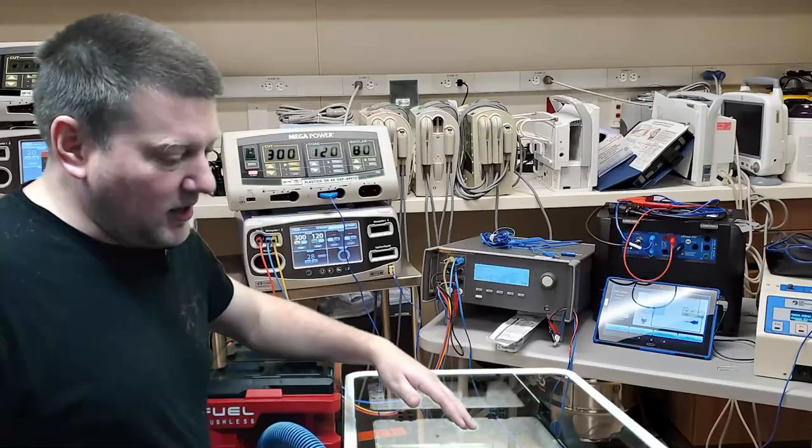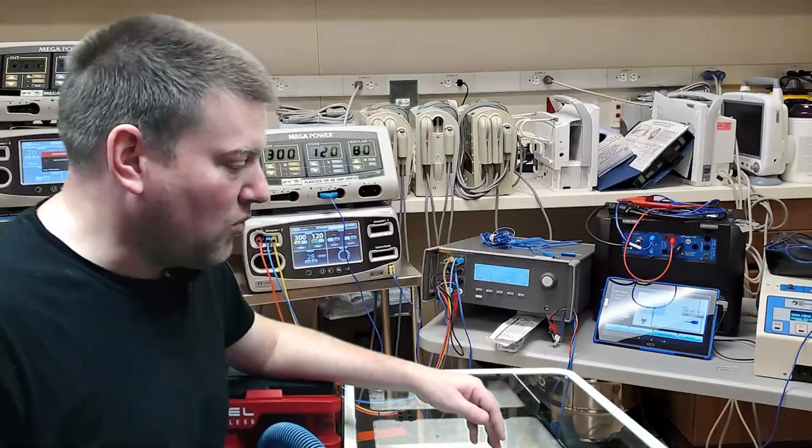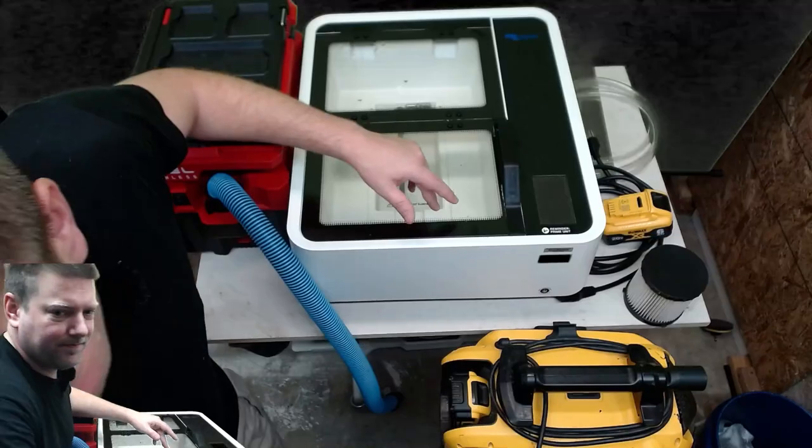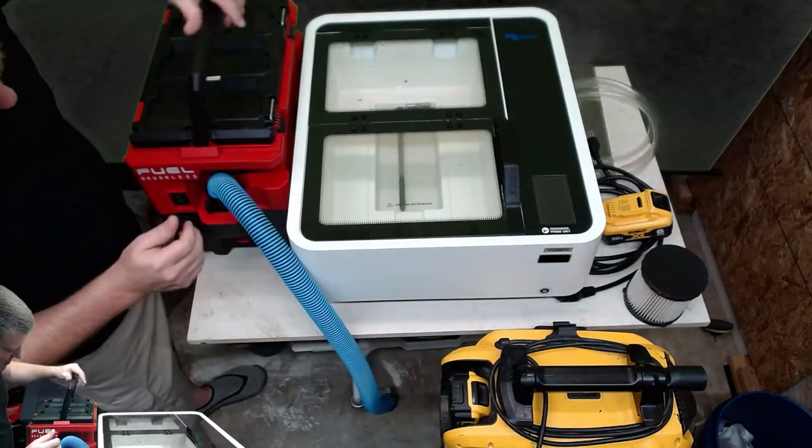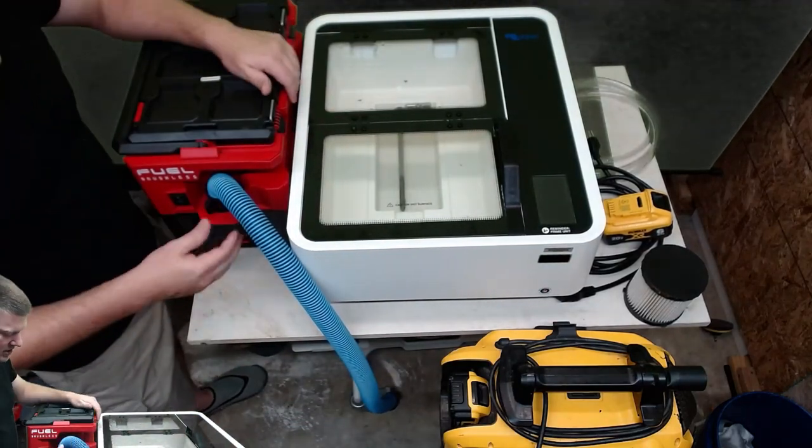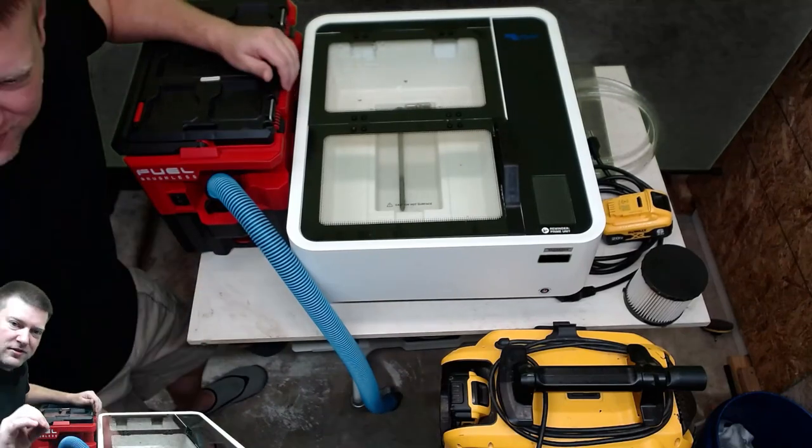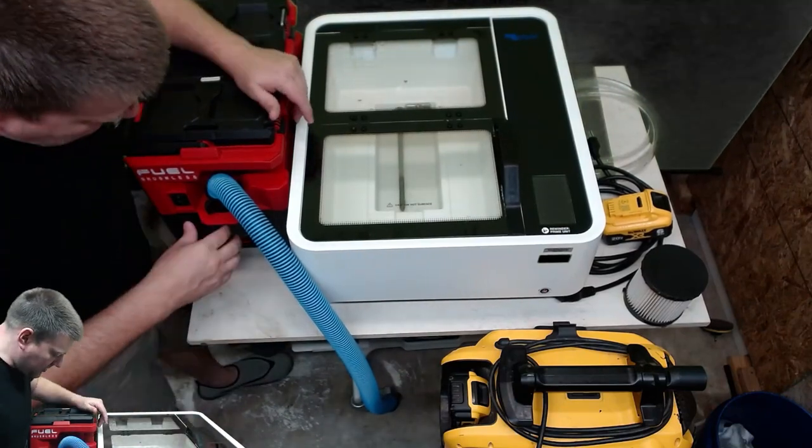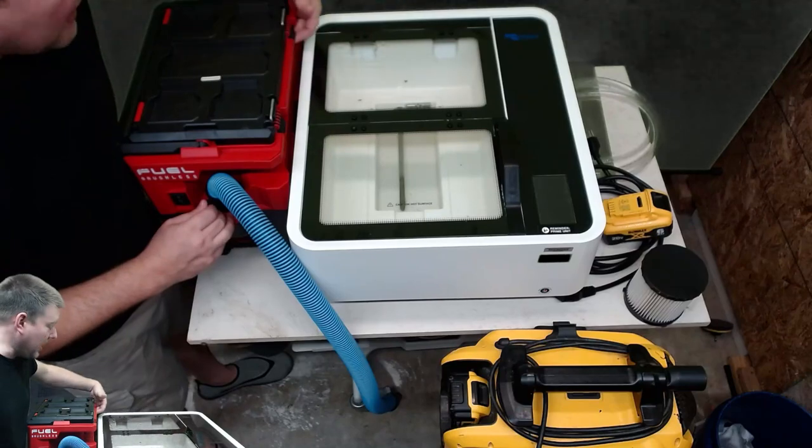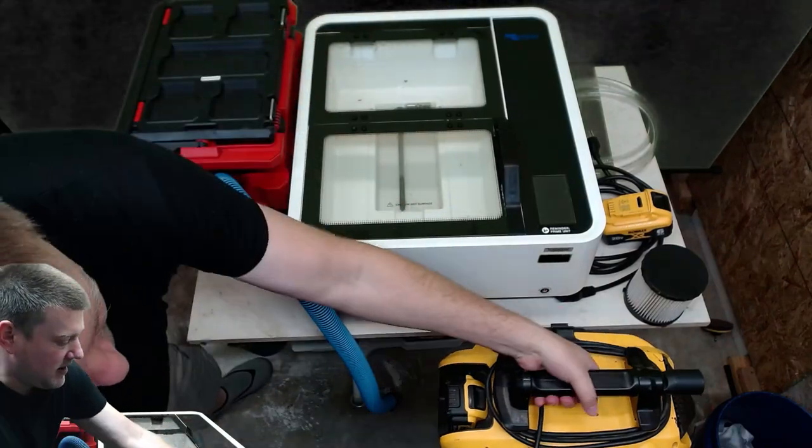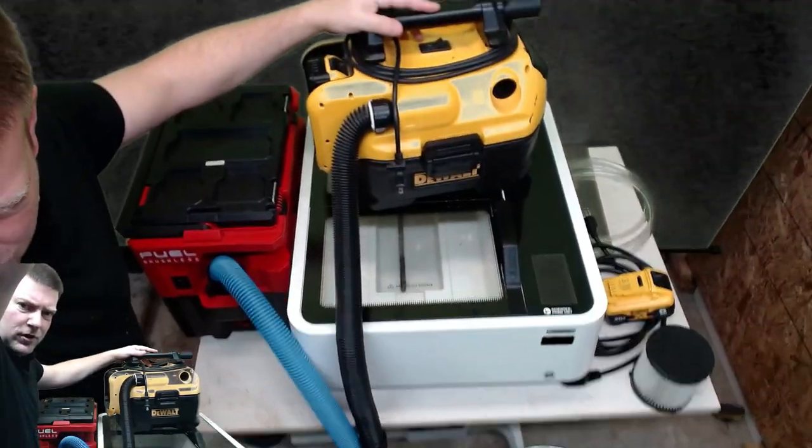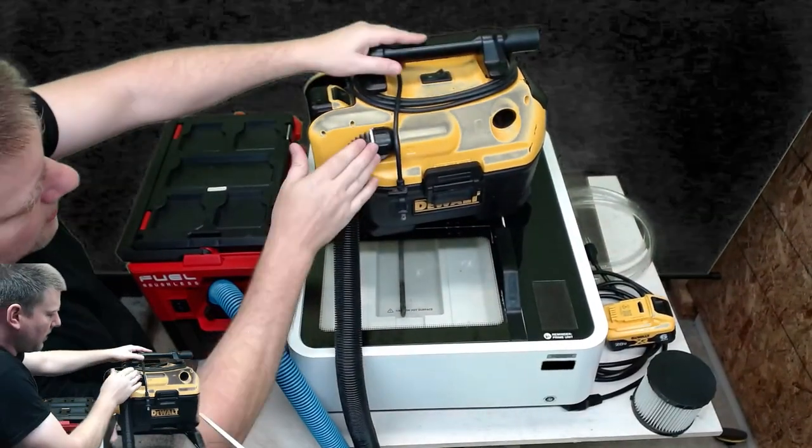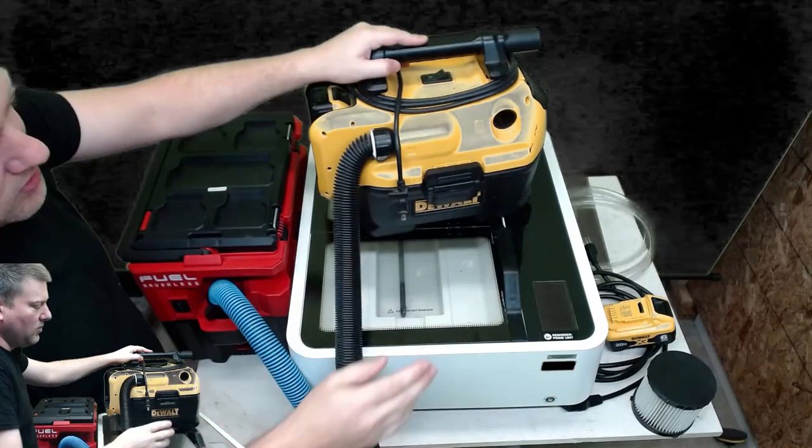Let's first go over what vacuums I have. This here is the Milwaukee packout version. All these vacuums have two things in common: they have a suction port and an exhaust port. Here I have the DeWalt version with a suction port and evacuation port.